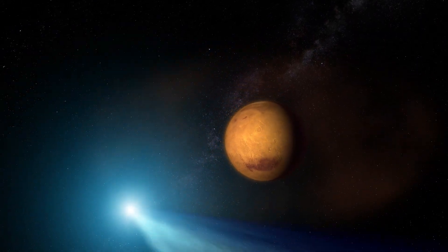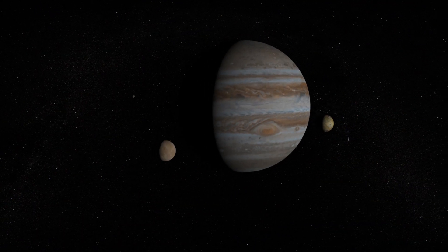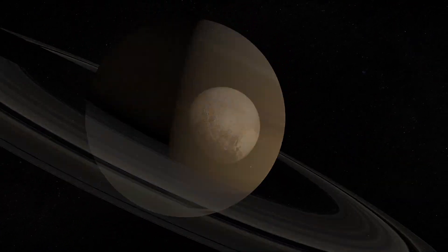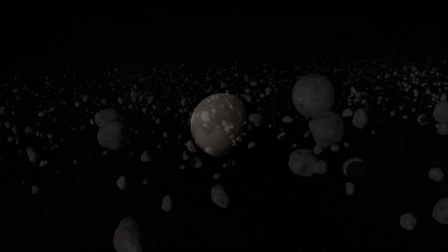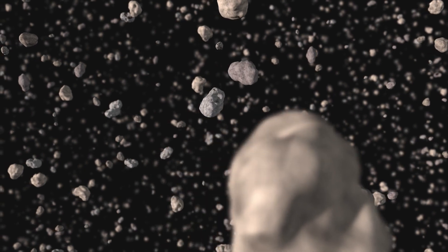Orbiting the sun with them are many other smaller objects. Comets, asteroids, lots of moons, planetary rings, things we used to think were planets, vast fields of planet-sized ice chunks, and tiny specks of dust.